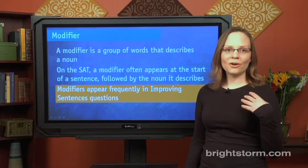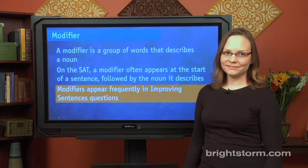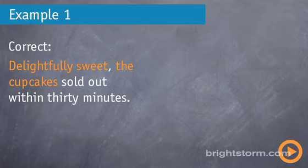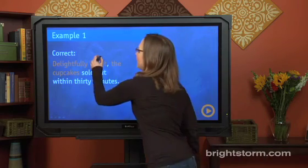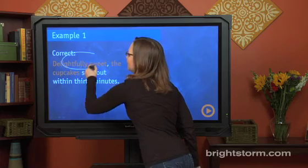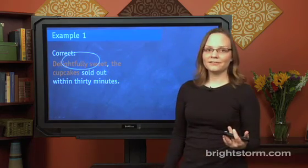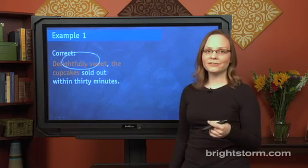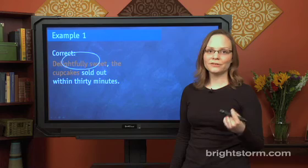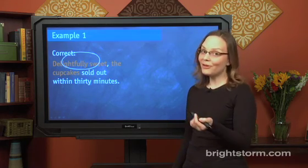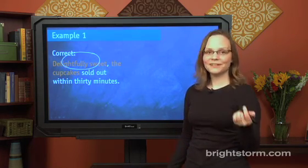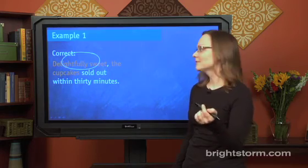Now to make that more concrete, let's look at some examples. Here's our first example of a modifier used correctly. This part right here — 'delightfully sweet' — is a modifier. Like we said earlier, a modifier is just a group of words describing a noun, and 'delightfully sweet' is a very small group, just two words, but it's a group of words describing a noun.